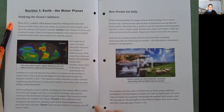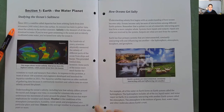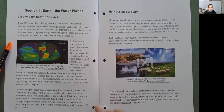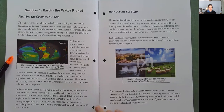Studying the ocean's saltiness. Since 2011, a satellite called Aquarius has been orbiting Earth from 644 kilometers, or 400 miles, above the surface. Its mission has been to gather data about the salinity in the surface water. Salinity is the measure of all the salts dissolved in water.